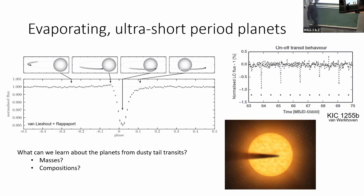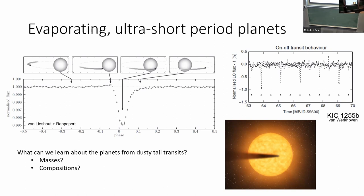On top of that, this little peak before the transit is real. The signal-to-noise there is a few, and we think that's probably due to forward scattering. Light coming off the star, just before the planet passes in front of it, hits the dusty tail and is scattered into our line of sight, giving you a little bit of extra flux. So all of this points to the fact that what we're probably seeing is a dusty tail coming from some kind of planet.